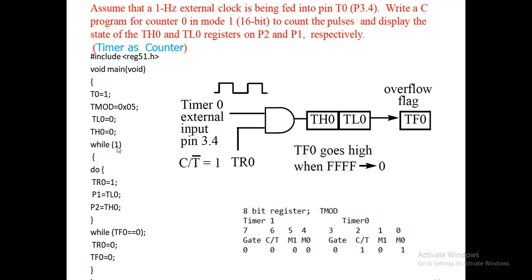Inside while(1), I am using a do-while loop. The do-while executes the statement first regardless of the condition — the condition is checked only after execution. If the condition is true, the loop repeats; if false, it exits. That is the key feature of the do-while loop. I write this do-while inside an infinite while(1) loop.